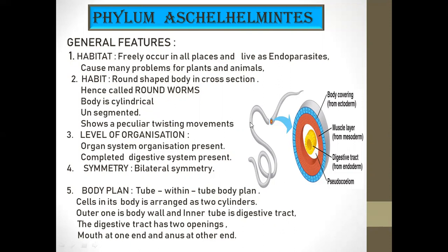Regarding habit: when we make a cross section, we obtain a round shape — these are roundworms, also called thread worms. The body is cylindrical and unsegmented. The body surface is very smooth. They show a peculiar twisting movement, which is exhibited among Aschelminthes and can be seen in video presentations.